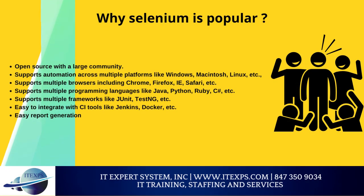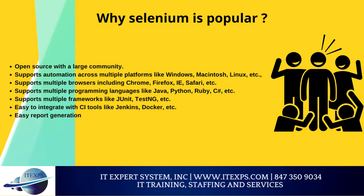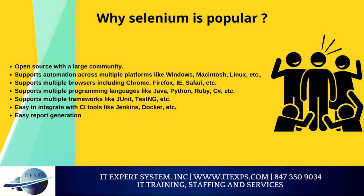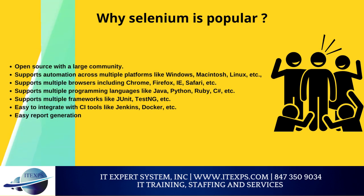Why is Selenium popular? It is open source with a large community. It supports automation across multiple platforms like Windows, Macintosh, Linux, etc. It supports multiple browsers including Chrome, Firefox, Safari, etc. It supports multiple programming languages like Java, Python, Ruby, C, etc. It supports multiple frameworks like JUnit, TestNG, etc. It is easy to integrate with CI tools like Jenkins, Docker, etc. And it provides easy report generation.